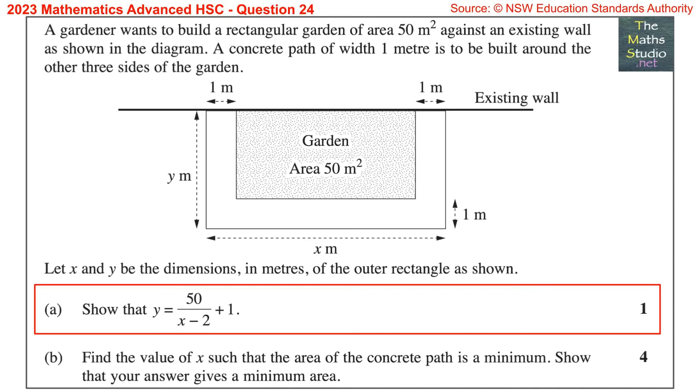Question 24. A gardener wants to build a rectangular garden of area 50 square meters against an existing wall as shown in the diagram. A concrete path of width 1 meter is to be built around the other three sides of the garden. Let x and y be the dimensions, in meters, of the outer rectangle as shown. Part A.